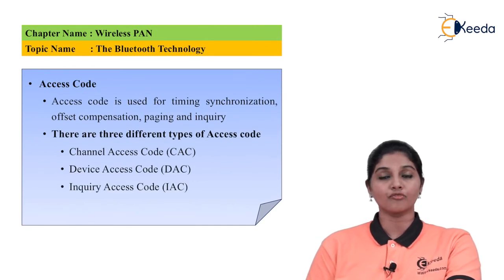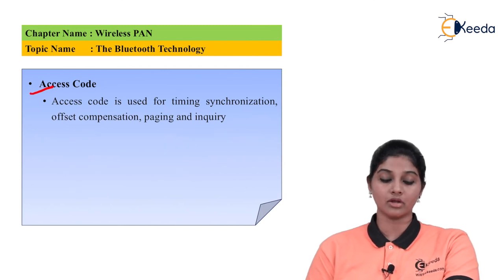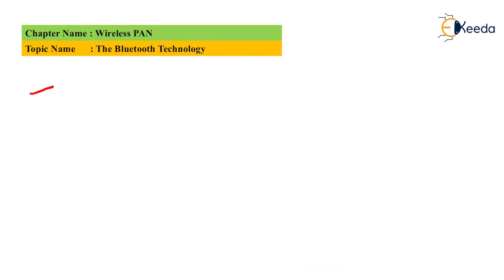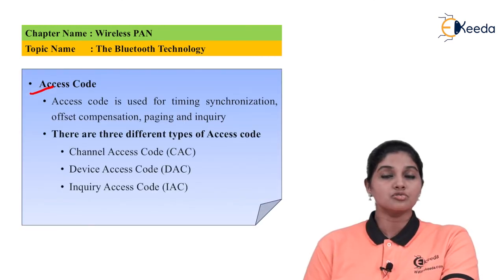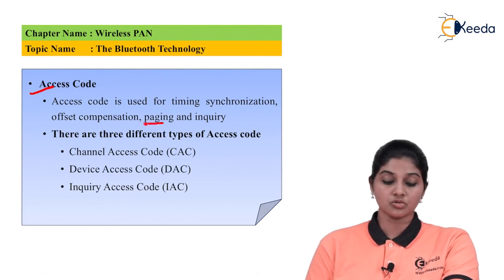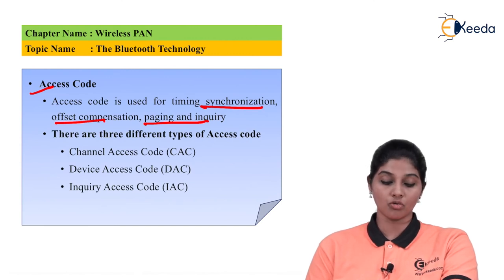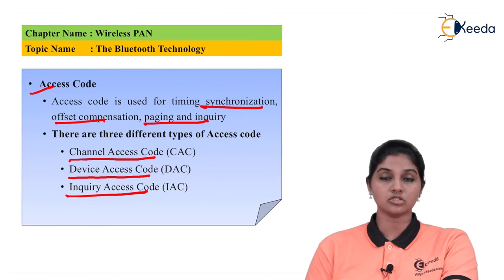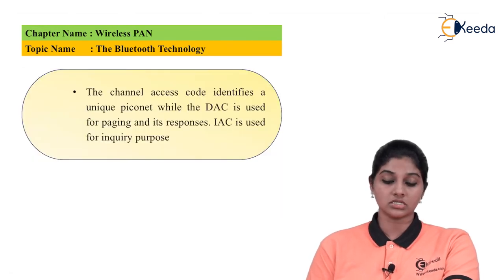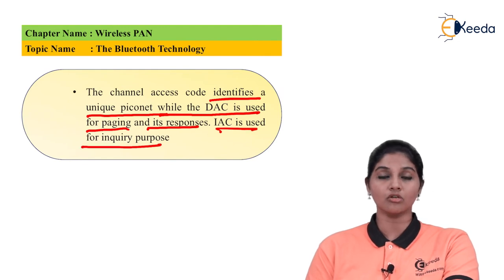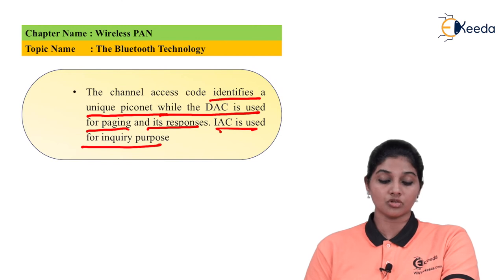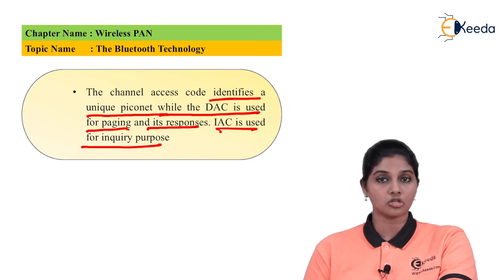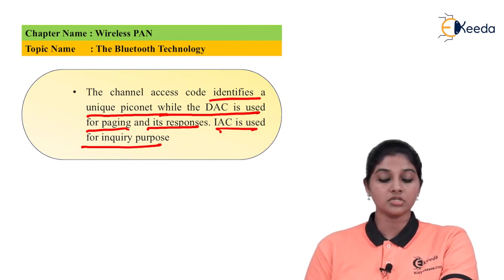Each Bluetooth packet consists of three entities: an access code of 68 or 72 bits, a header of 54 bits, and a payload varying from 0 to 2745 bits. The access code is used for time synchronization, offset compensation, and paging and inquiry functions. There are three types of access code: Channel Access Code (CAC) identifies the unique Piconet; Device Access Code (DAC) is used for paging and its response; and Inquiry Access Code (IAC) is used for the inquiry purpose.